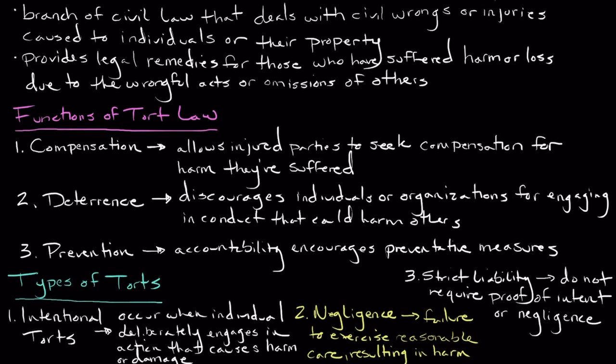In conclusion, tort law is an essential aspect of civil law as it provides remedies for individuals who have suffered some sort of harm or loss due to the wrongful actions of others. Its purpose is to ensure justice, compensate the injured parties, deter future wrongdoings, and promote preventative measures. By understanding the basics of tort law and the different types of torts, we can help navigate the legal system more effectively and contribute to a society that values accountability and fairness. From a business perspective, understanding the different types of torts is important for helping the business not only maintain its public image, but also navigate any sort of legal liability. I hope you've enjoyed this video on tort law. Thank you for watching, and we'll see you next time.